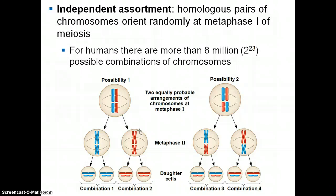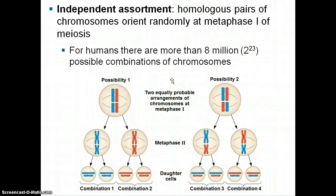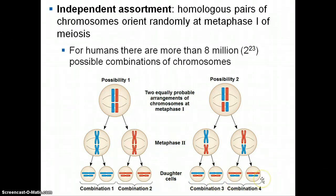With independent assortment, when homologous pairs of chromosomes line up on the metaphase plate, it's random. They could line up with just paternal on one side and maternal on the other, or they could flip-flop, having some paternal on one side and some maternal on the other. During anaphase they're pulled apart, giving all these different variations. You could get combination one — gametes that just have paternal chromosomes; combination two — just maternal chromosomes; or combination three — a different variety of maternal and paternal in each gamete. For humans with 23 chromosomes, there are eight million possible combinations of chromosomes when they line up on the metaphase plate.